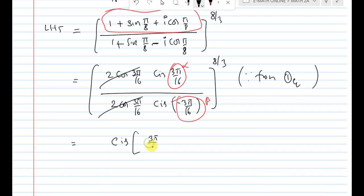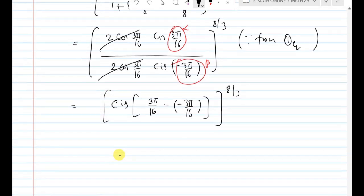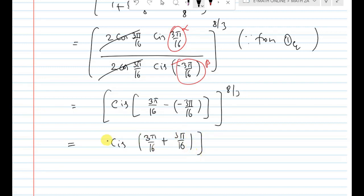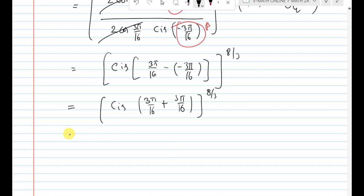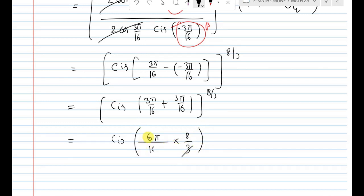Alpha minus beta = 3π/16 minus (-3π/16) = 6π/16, whole power 8/3. The 3s cancel, giving cis of 6π/16 × 8/3. Simplifying: 6π × 8 / (16 × 3) = 48π/48 = π. So we get cis(π).